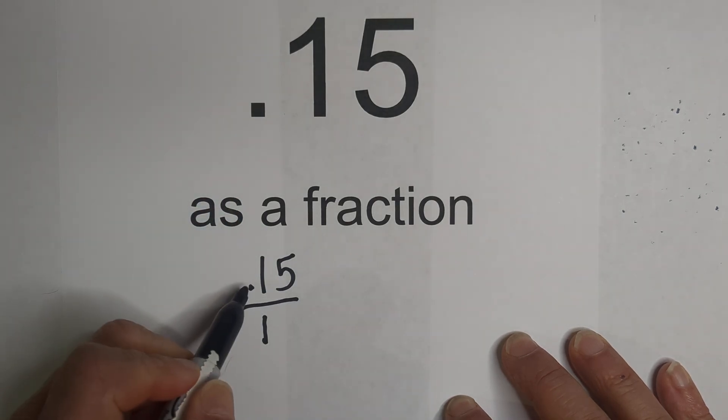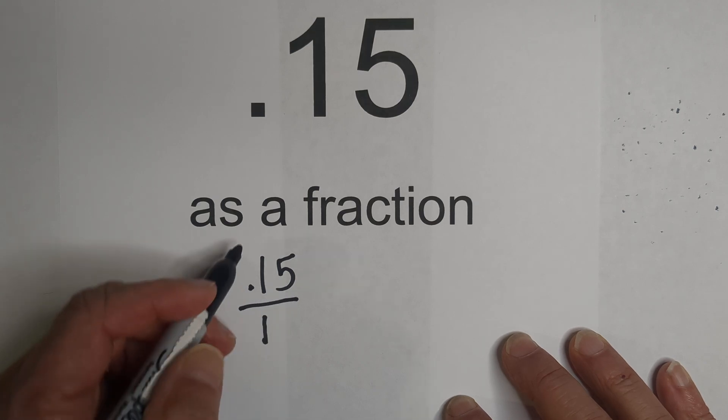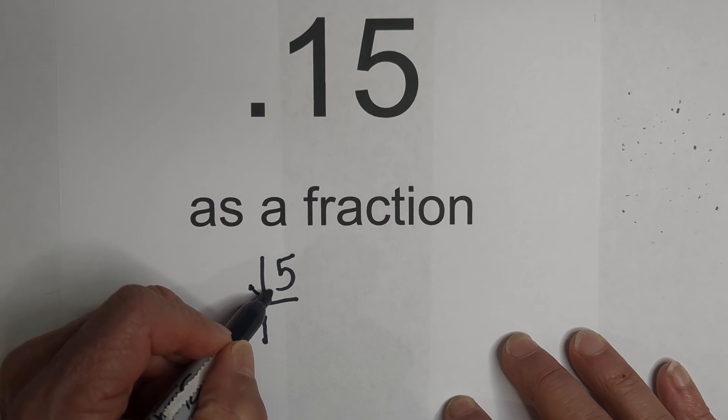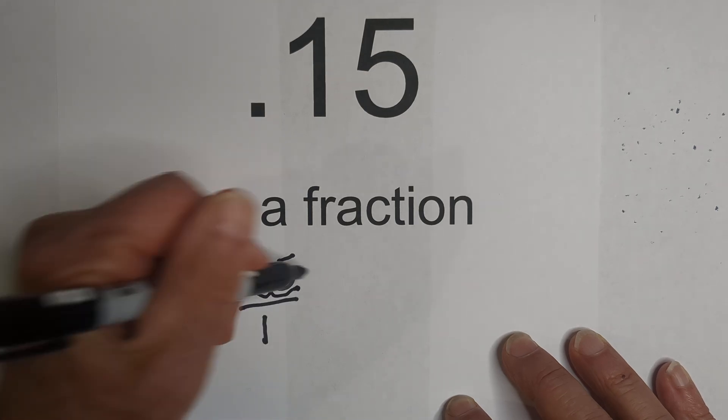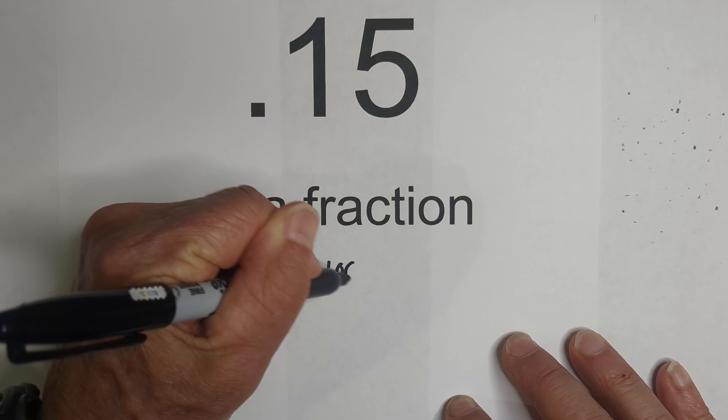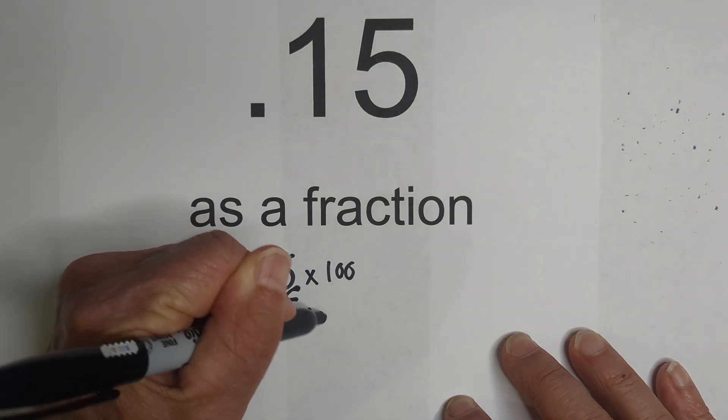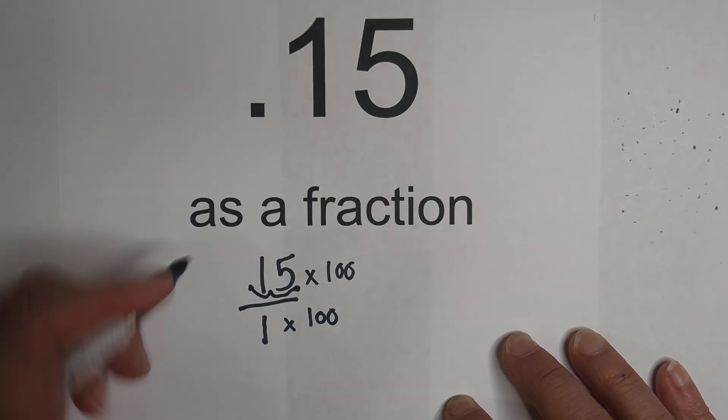We then want to move the decimal all the way to the right so that it's a whole number. In order to do that, we need to move it two places. So we will multiply the top and bottom of the fraction, numerator and the denominator, by 100.